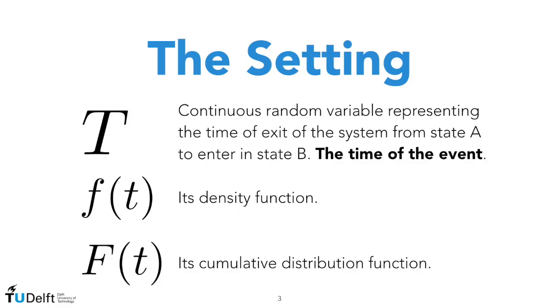In the usual setting of survival analysis, we have a random variable capital T, which is a continuous random variable representing the time at which we observe the transition from state A to state B, the so-called time of the event. For us, it will be, for example, the time of the default. We then call small f the density of this random variable, and with capital F we indicate its cumulative distribution function.